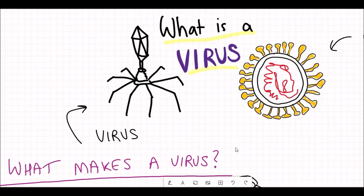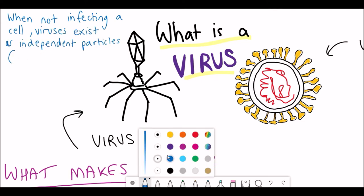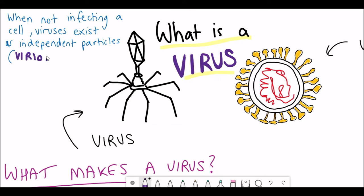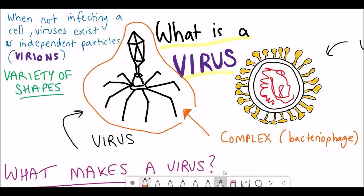So when a virus is not inside an infected cell, or in the process of infecting a cell, viruses exist in the form of independent particles, often referred to as virions. So whilst all viruses share these core characteristics, they are hugely diverse.